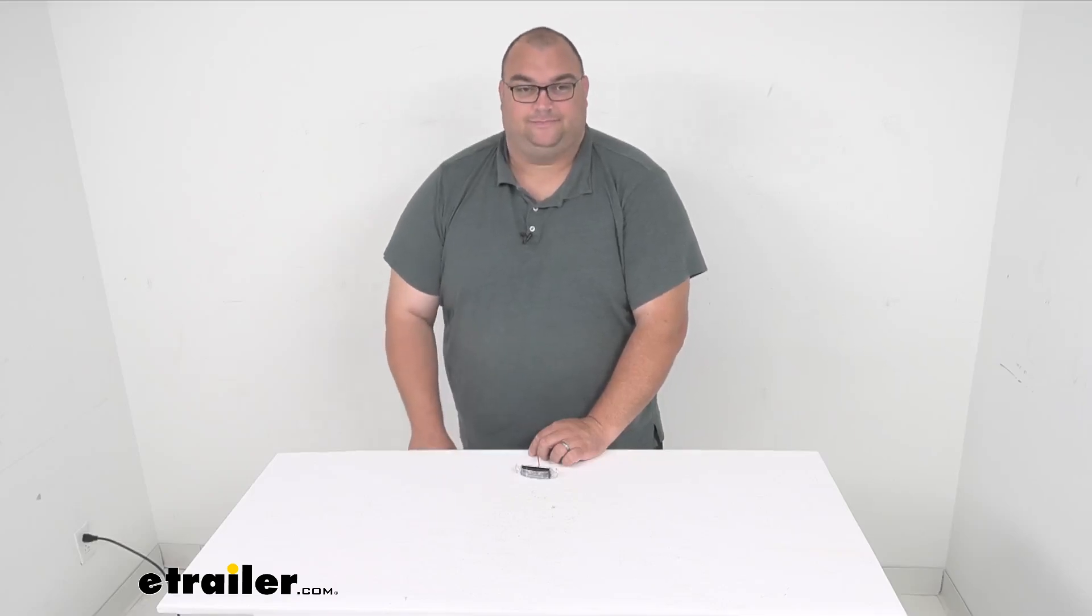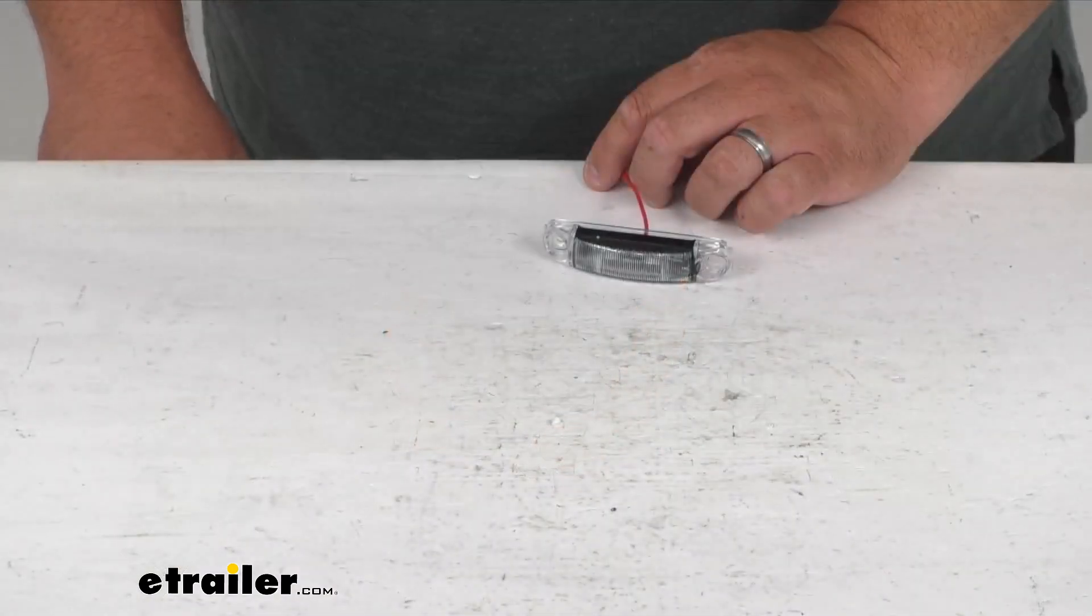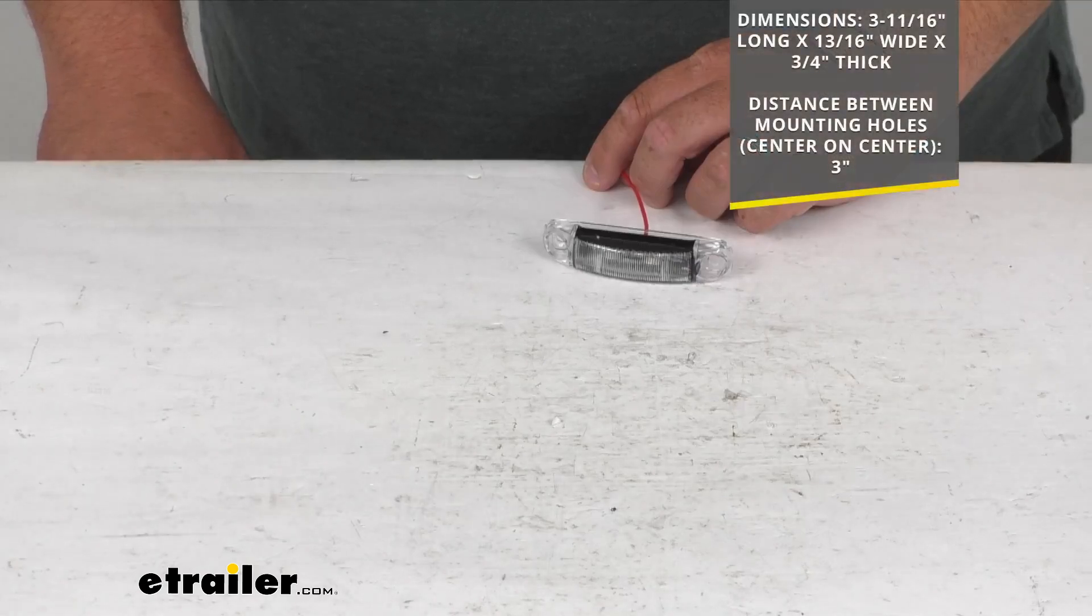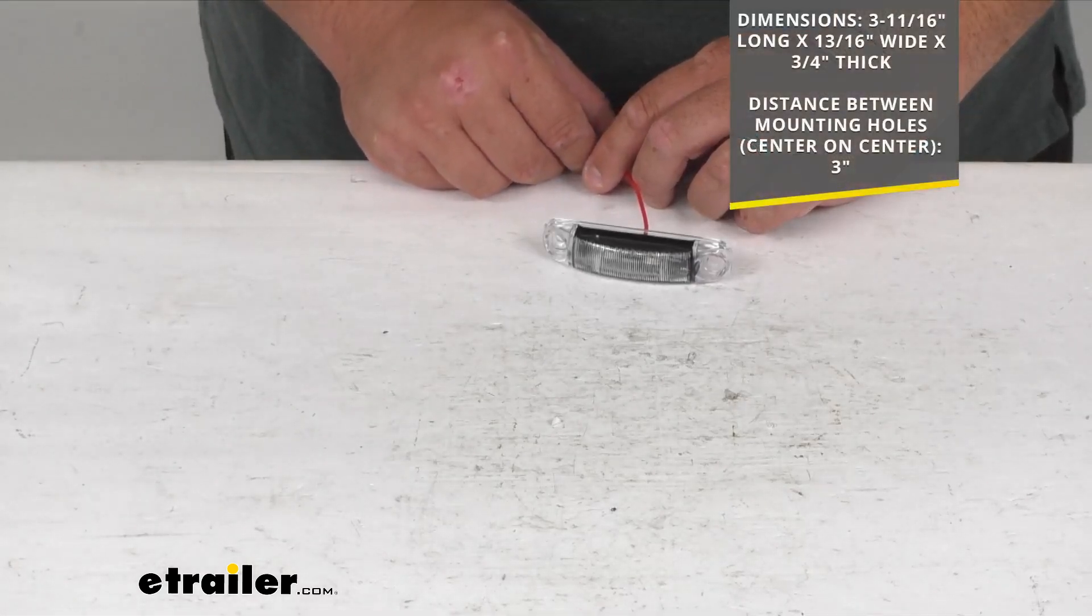Hello neighbors, today we're looking at our LED trailer clearance or side marker light. It's a submersible two-diode red light with a clear lens. This rectangular LED mini trailer light functions as both a clearance light or a side marker when properly mounted.